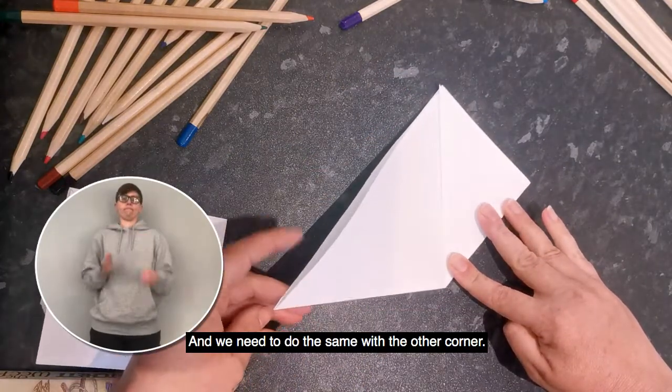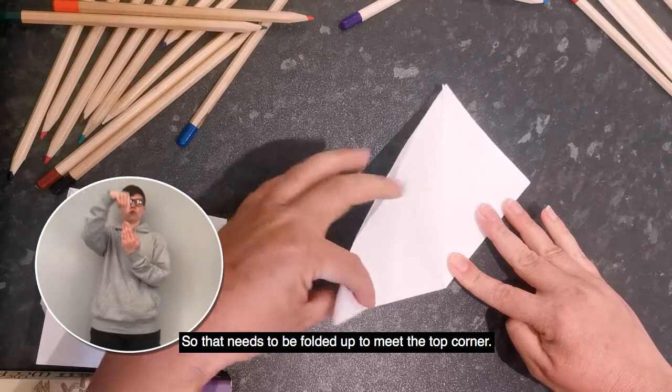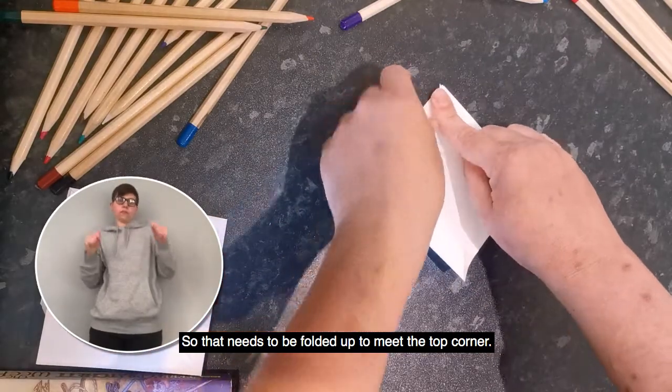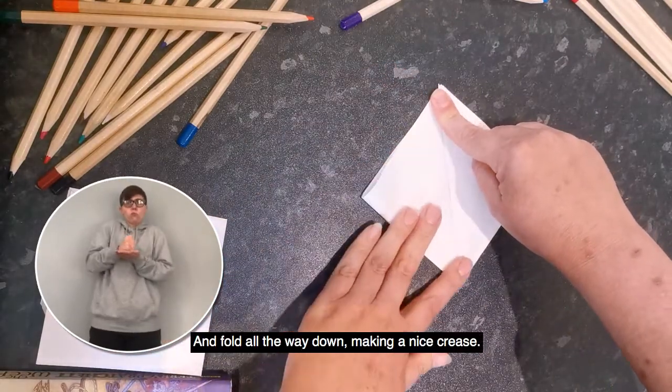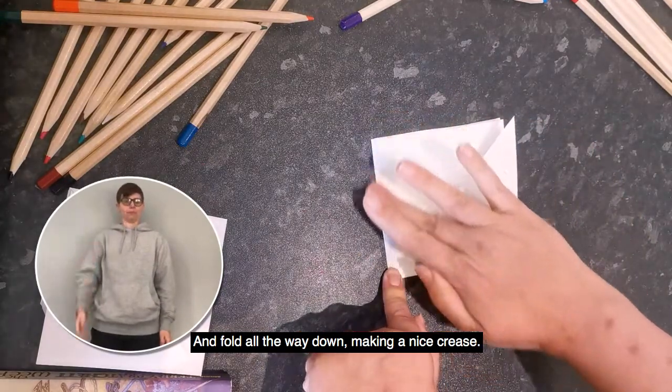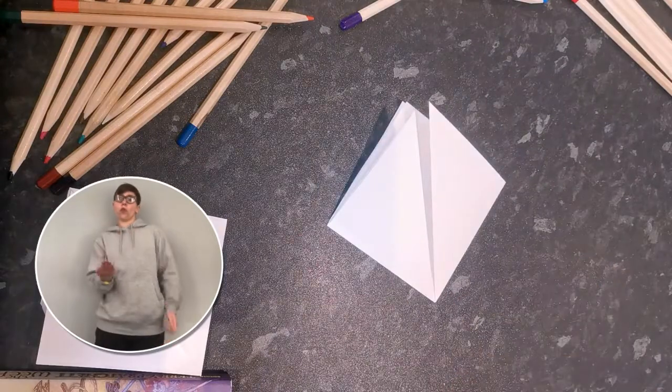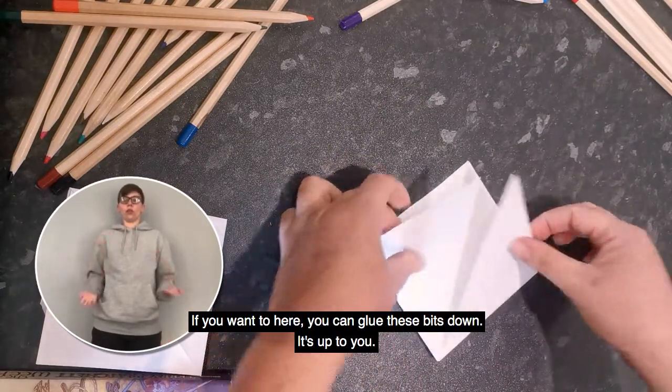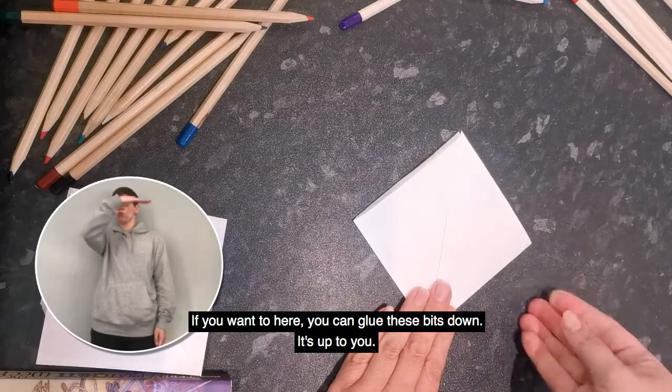And we need to do the same with the other corner. So that needs to be folded up to meet the top corner. And fold all the way down, make a nice crease. If you want to here, you can glue these bits down. It's up to you.